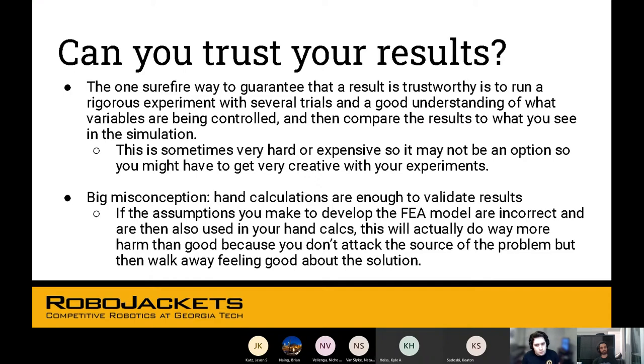Another not-so-great way is to do a hand calculation. Hand calculation is not the best for validating your results. In order to set up your FEA for a part, you have to make some assumptions. If you make the same assumptions for hand calculations, then you'll probably just make the same errors in your hand calculation as well. So this is probably going to be a problem because you'll think you got the same results, so it's probably fine. But then you won't actually attack the source of the problem.